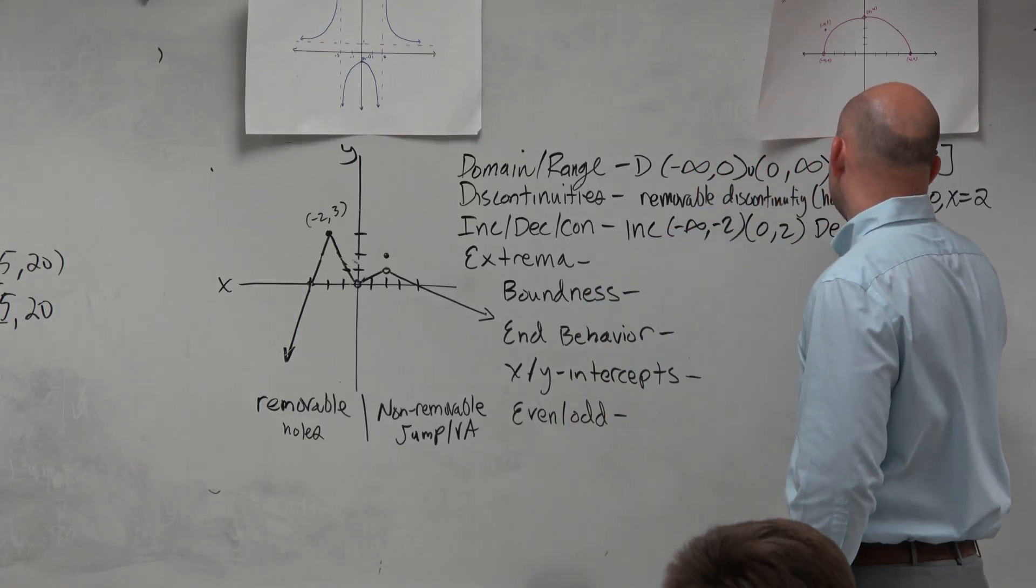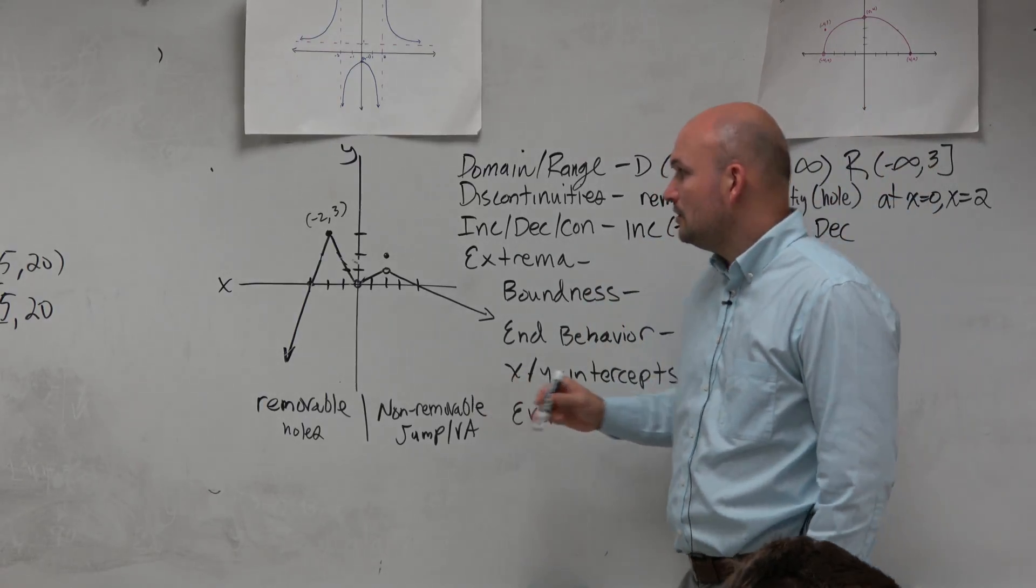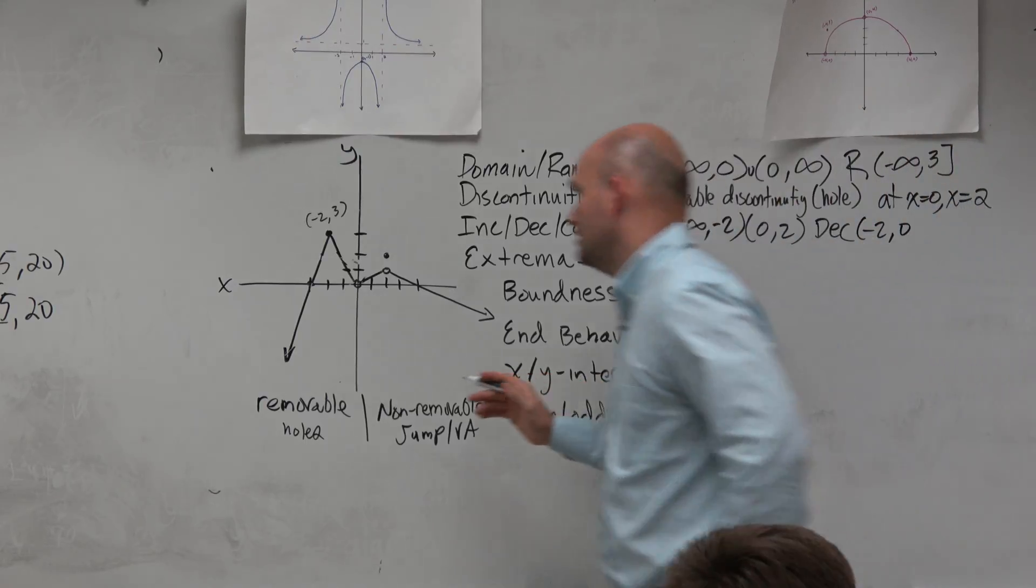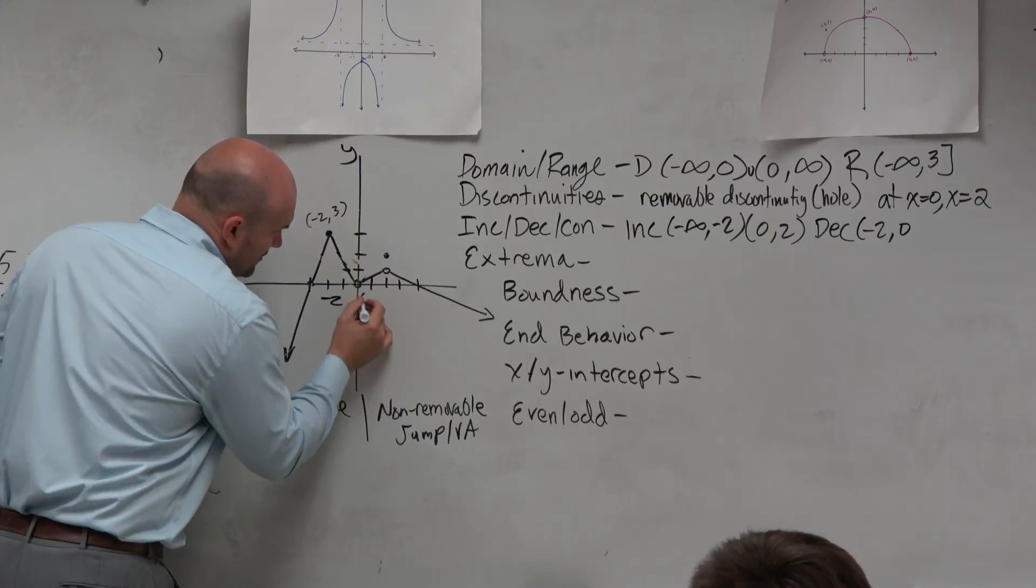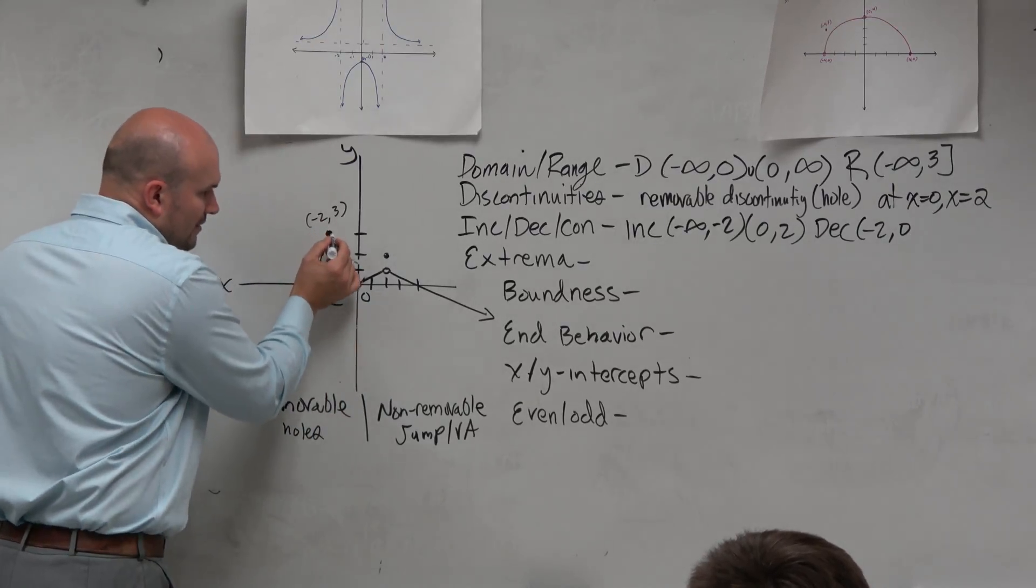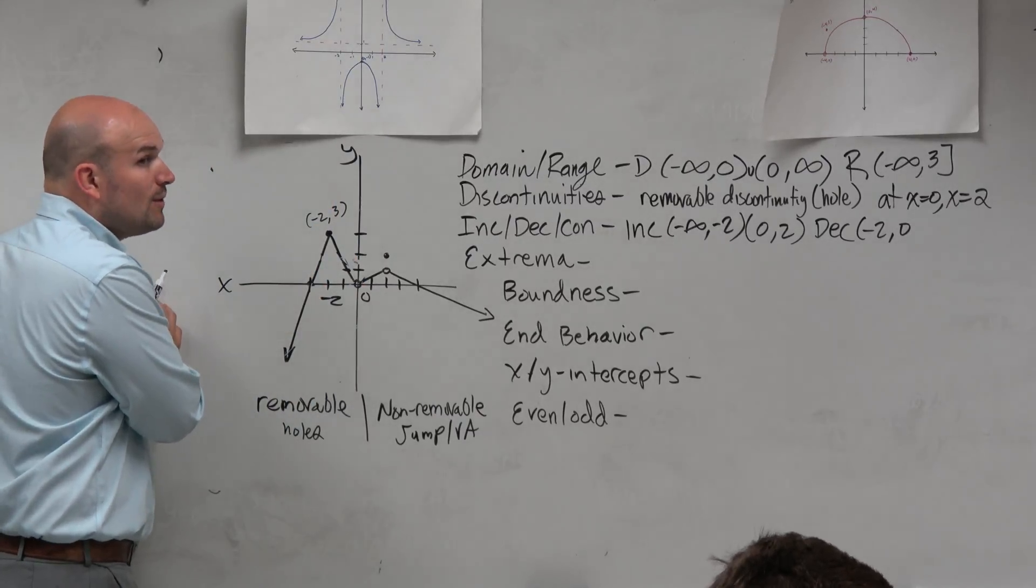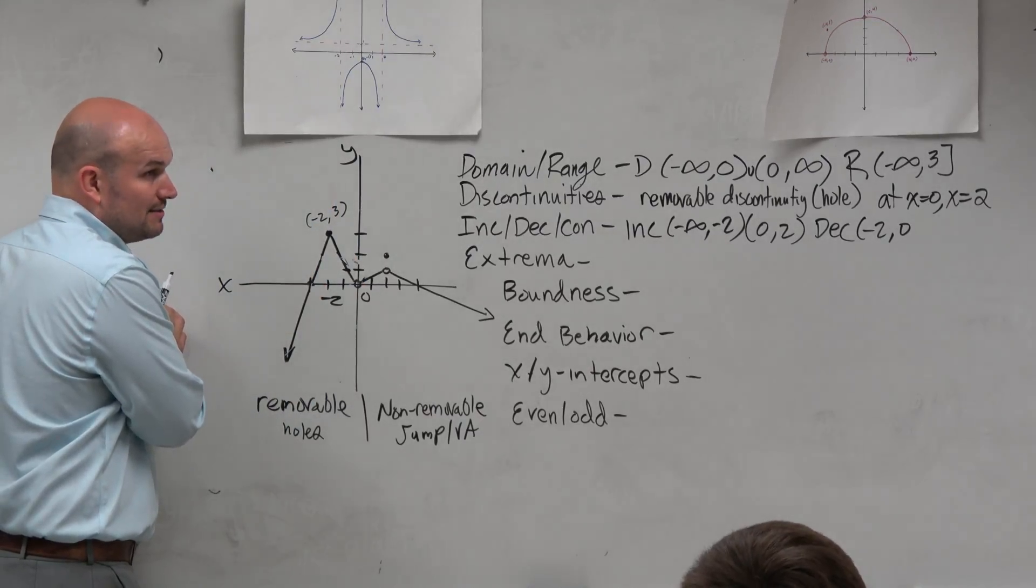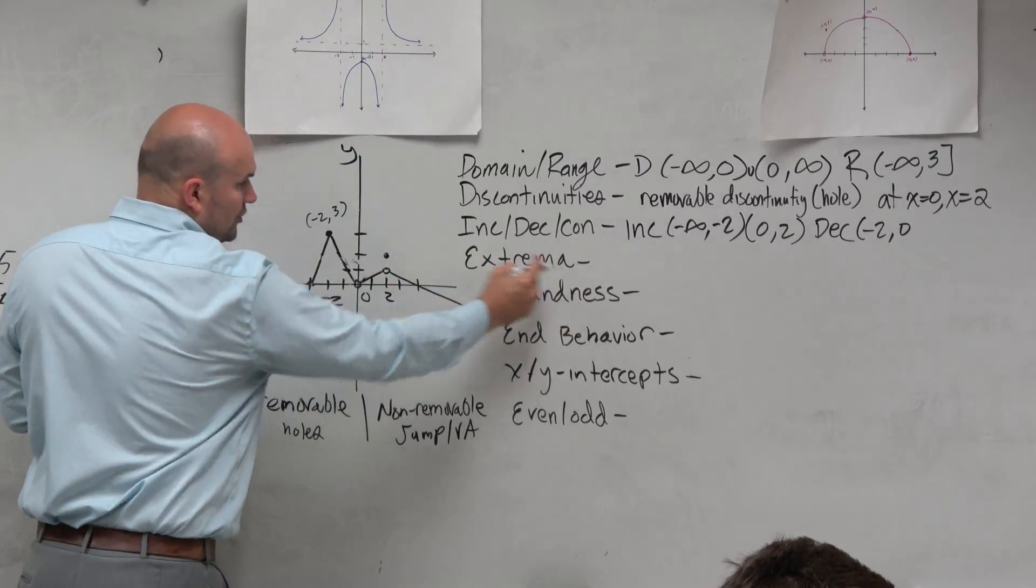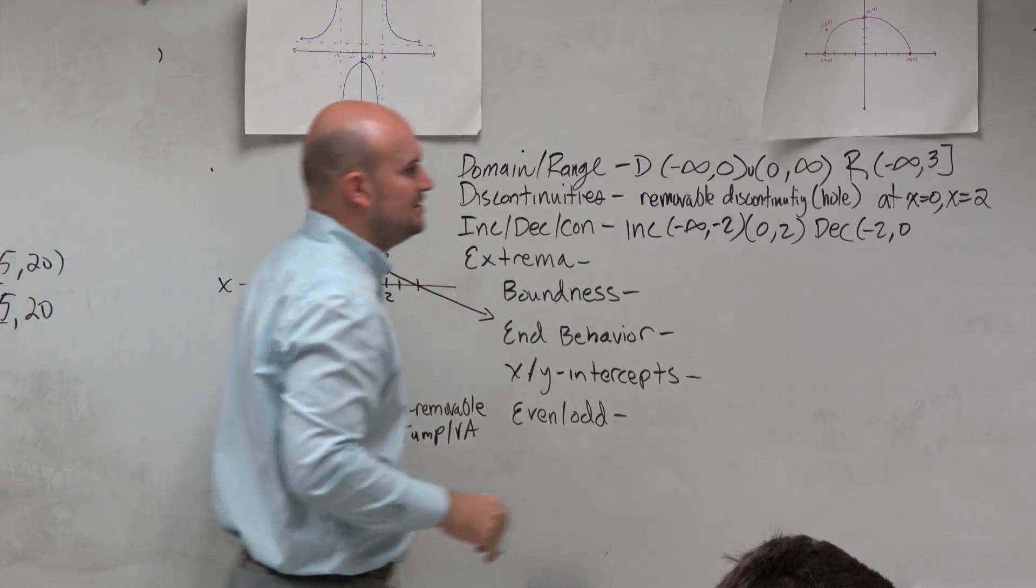And we could say that the graph is decreasing from negative 2 to 0. As I read this graph from negative 2 to 0, the y values are going down. I don't care what the y values are, I just know they're going down. And then as I continue from 2 all the way to infinity, this graph is going to continue going down.